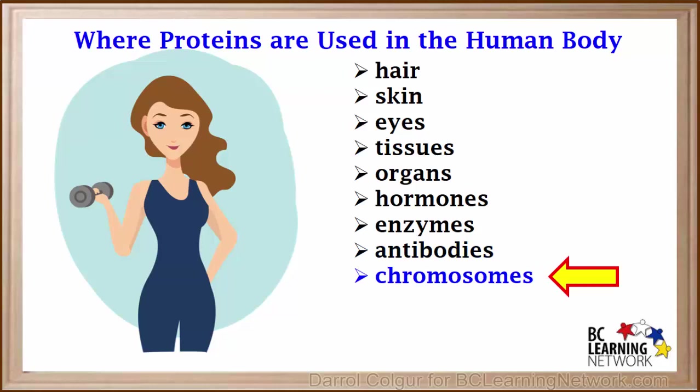Chromosomes consist of both DNA and proteins. Proteins also carry out transportation in our body. One example is hemoglobin, which transports oxygen throughout the bloodstream.